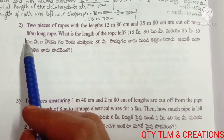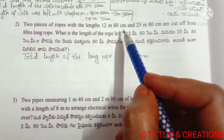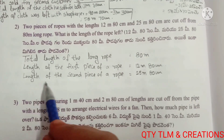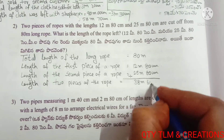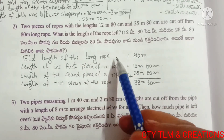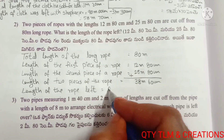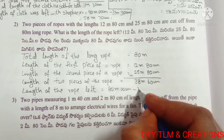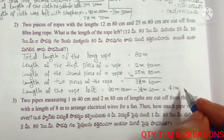Total length of the long rope equals 80 meters. Length of the first piece of rope equals 12 meters 80 centimeters, and length of the second piece of rope equals 25 meters 80 centimeters. Length of two pieces of rope equals 38 meters 60 centimeters. Length of rope left equals 80 meters 0 centimeters minus 38 meters 60 centimeters, that equals 41 meters 40 centimeters.